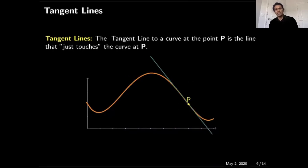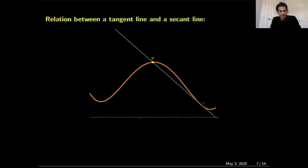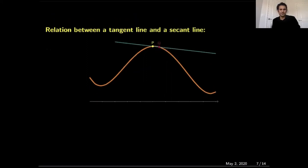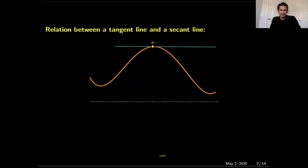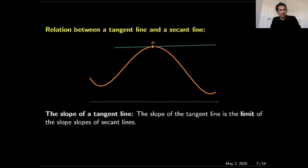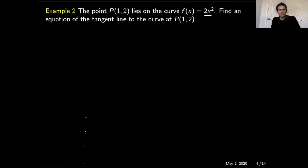What is the relation between a tangent line and a secant line? Here you can see the secant line passing through points P and Q. As we run this animation, we observe that the secant line becomes the tangent line when point Q approaches point P. So the slope of a tangent line is the limit of the slope of the secant lines. To calculate the slope of the tangent line, we calculate the slope of secant lines as Q approaches P.